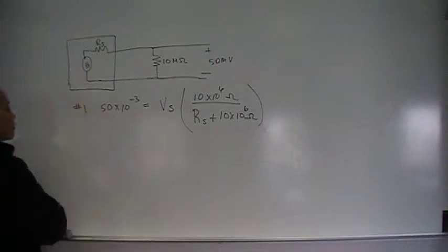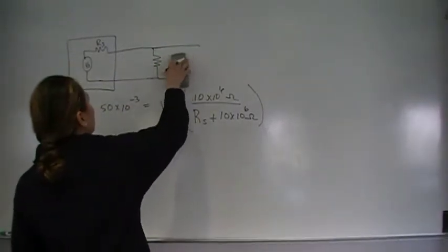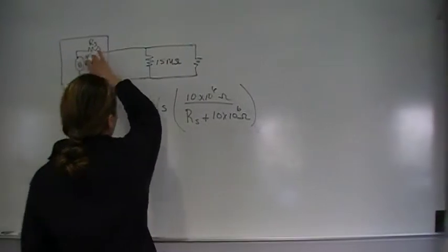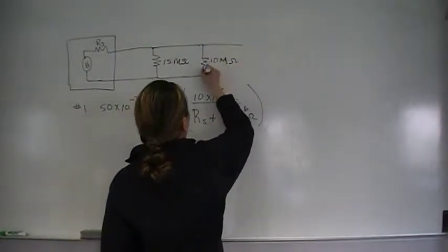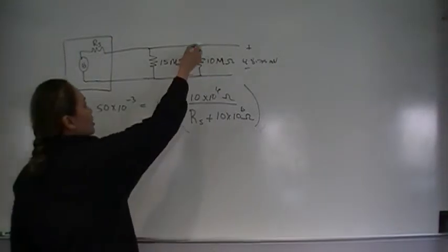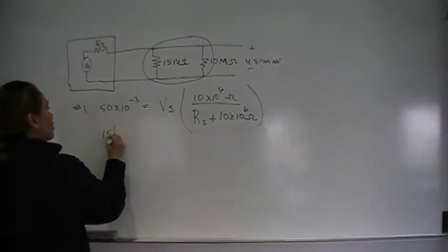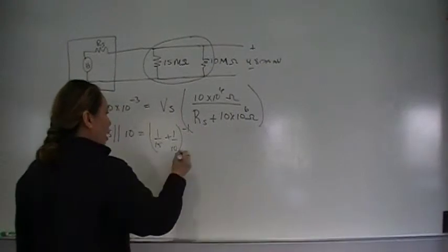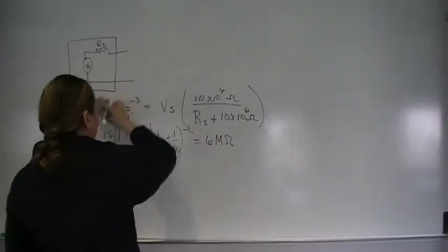The second equation comes from connecting the 15 megaohm resistor in series, then taking a parallel reading across it with our voltmeter, getting 48.75 millivolts. Before using voltage division, we consolidate: 15 in parallel with 10 megaohms gives 1/(1/15 + 1/10) inverted, which equals 6 megaohms. We replace those two parallel resistors with 6 megaohms.